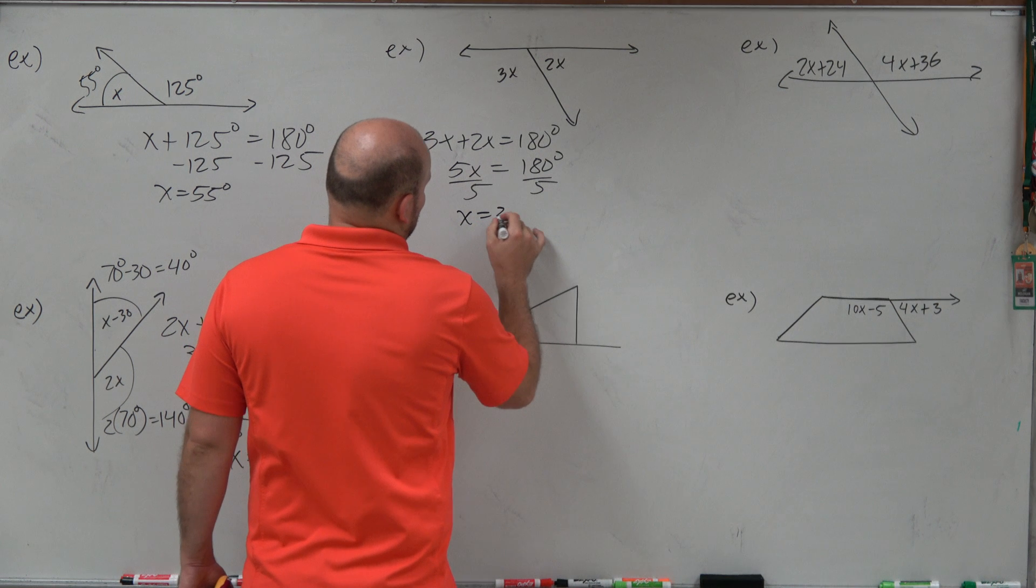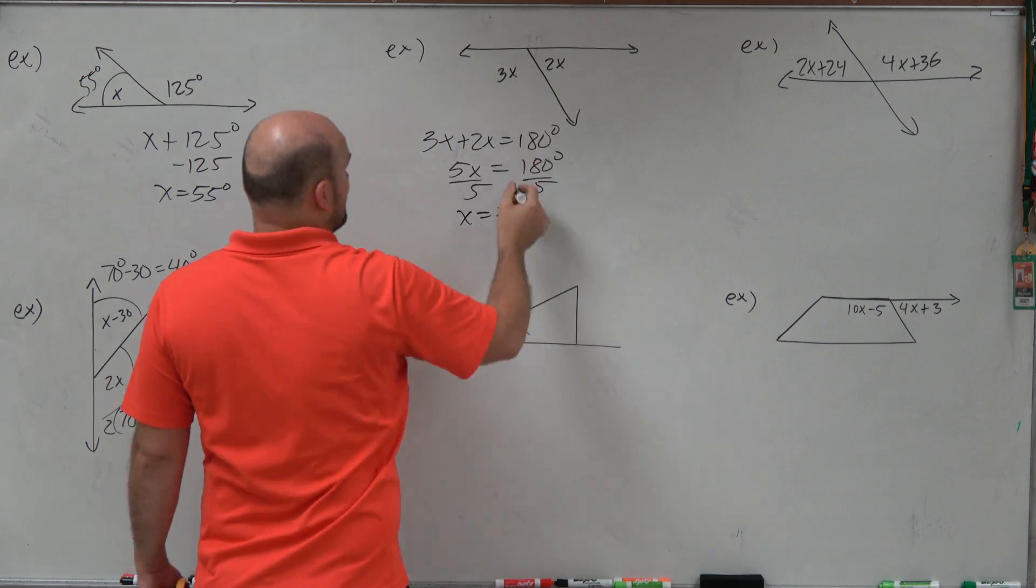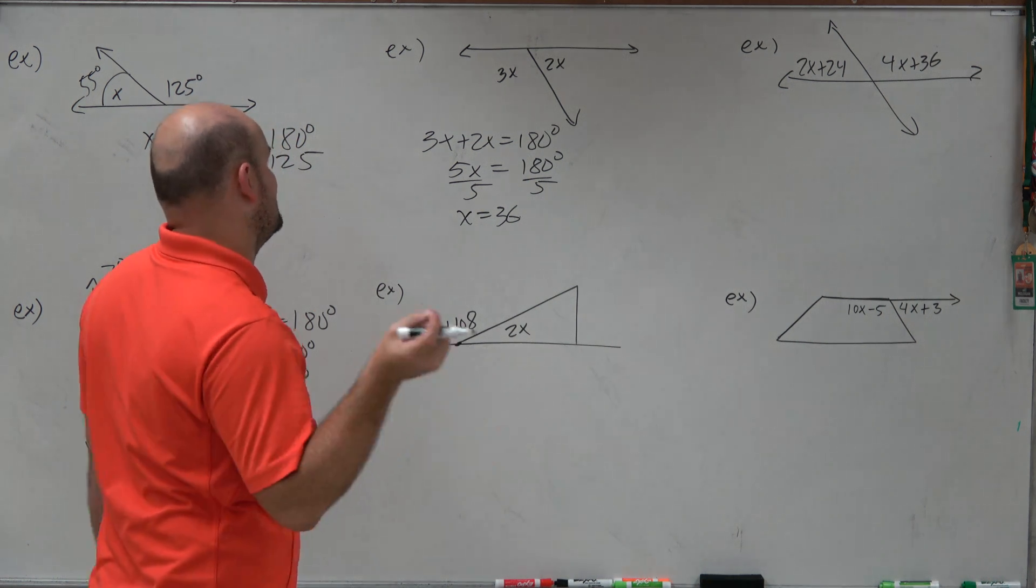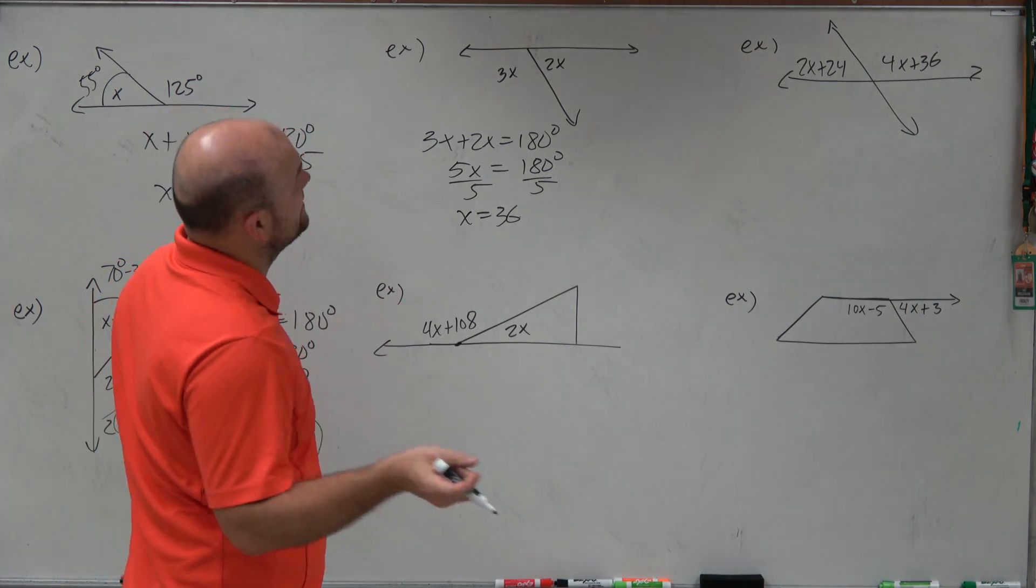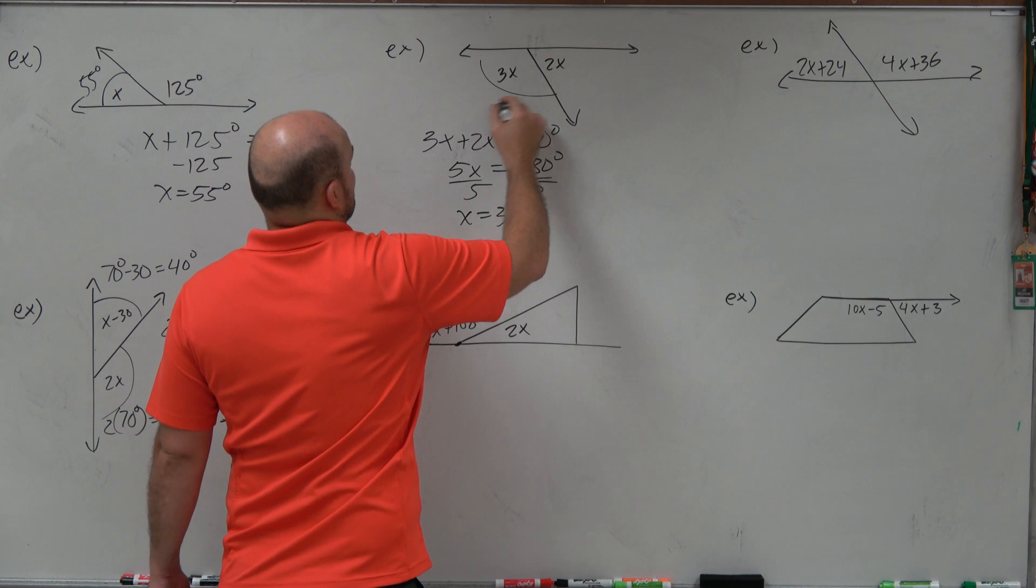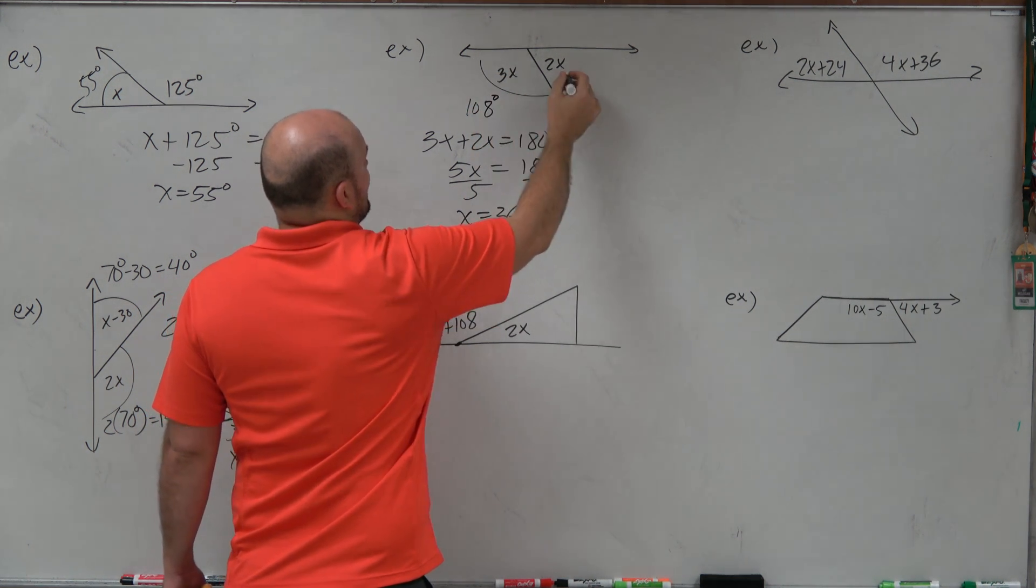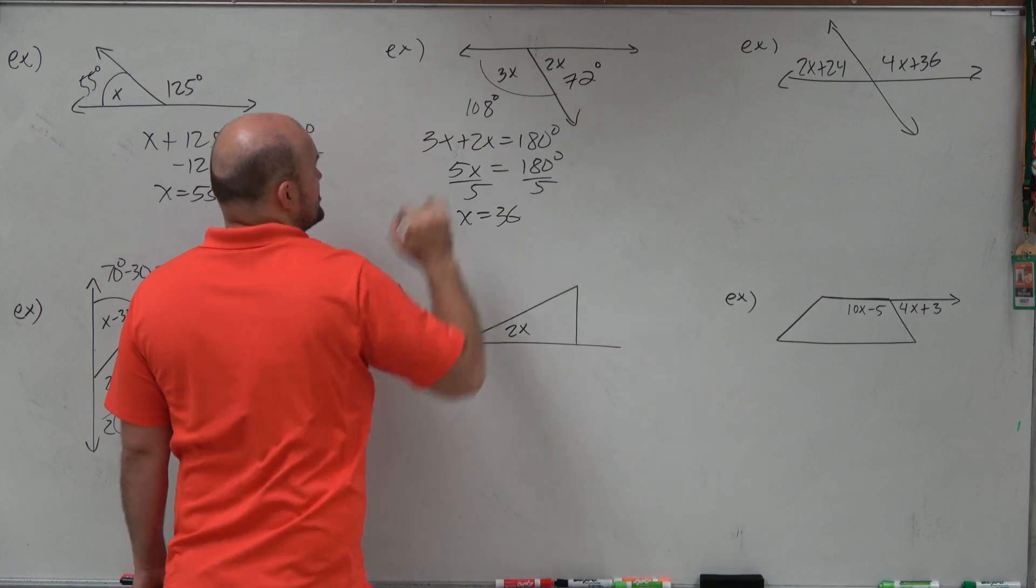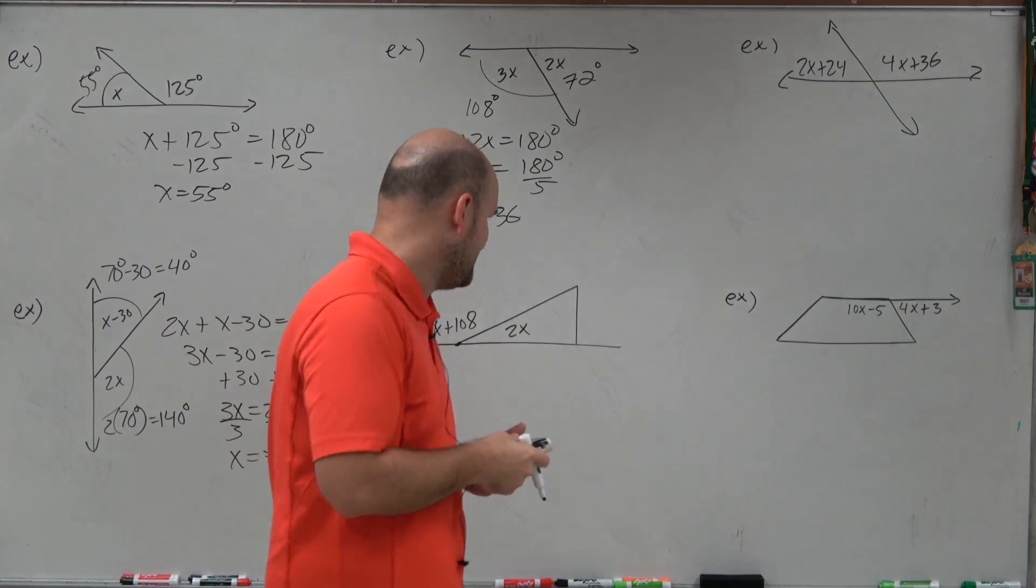So therefore, x is going to equal 36. So therefore, 3 times 36 is going to be 108. And then 2 times 36 is going to be 72. And again, we want to make sure, do those two add up? Yes, they do. So therefore, I did all my math correctly.